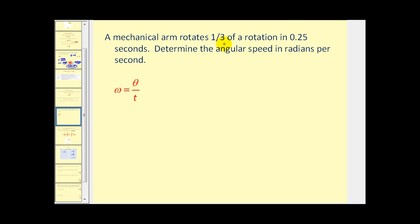Let's take a look at a problem. A mechanical arm rotates one third of a rotation in 0.25 seconds. So we know our time is 0.25 seconds. But it states the arm rotates one third of a rotation. We know a complete rotation would be 360 degrees. So one third of 360 degrees would be 120 degrees. But we do have to express our angle in radians. I know that π/3 radians is 60 degrees, so 2π/3 would be 120 degrees.